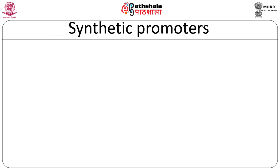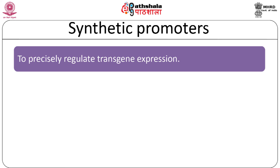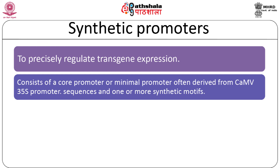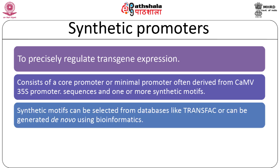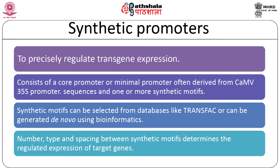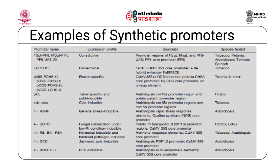In addition to these promoters, there is a need for promoters that can precisely regulate transgene expression. With the help of synthetic promoters, multiple transgenes can be successfully incorporated into plant systems. Synthetic promoters consist of a core or minimal promoter, often derived from the CaMV 35S promoter sequence, containing a TATA box 50 base pairs from the transcription start site and additional sequences such as a CAAT box. Along with the core promoter, one or more synthetic motifs are present. These motifs can be selected from databases like TRANSFAC or generated de novo using bioinformatics. The number, type, and spacing between synthetic motifs determines the regulated expression of target genes. Some synthetic promoters are listed in the accompanying table.